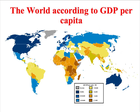This map of the world shows countries colour-coded according to their GDP per capita. Countries in grey are those where data is unavailable. Countries coded in blue have the highest GDP per capita, with darker blue indicating greater economic development. Yellow and orange colours indicate less economically developed countries. One region that particularly stands out is sub-Saharan Africa, which has the highest concentration of less economically developed countries by GDP per capita.